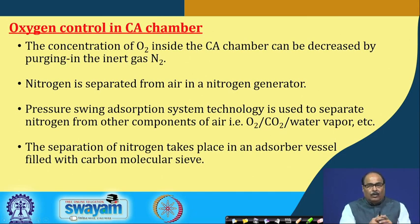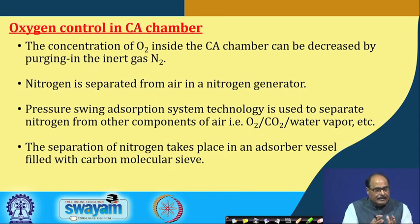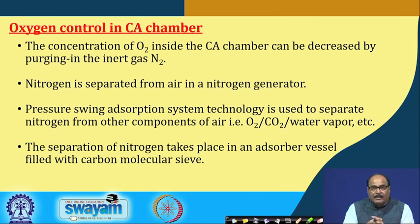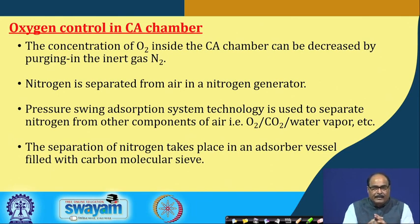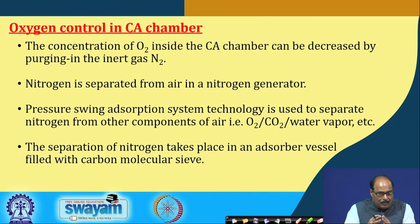From these three considerations one can calculate the total cooling load of the refrigeration unit. The second aspect is oxygen control in the control atmosphere chamber. The concentration of oxygen inside the CA chamber can be decreased by purging in the inert gas nitrogen, and nitrogen is separated from air in a nitrogen generator. Pressure swing adsorption (PSA) technology is generally used to separate nitrogen from other components of air — O2, CO2, or water vapour. The separation of nitrogen takes place in an adsorber vessel filled with carbon molecular sieves (CMS).